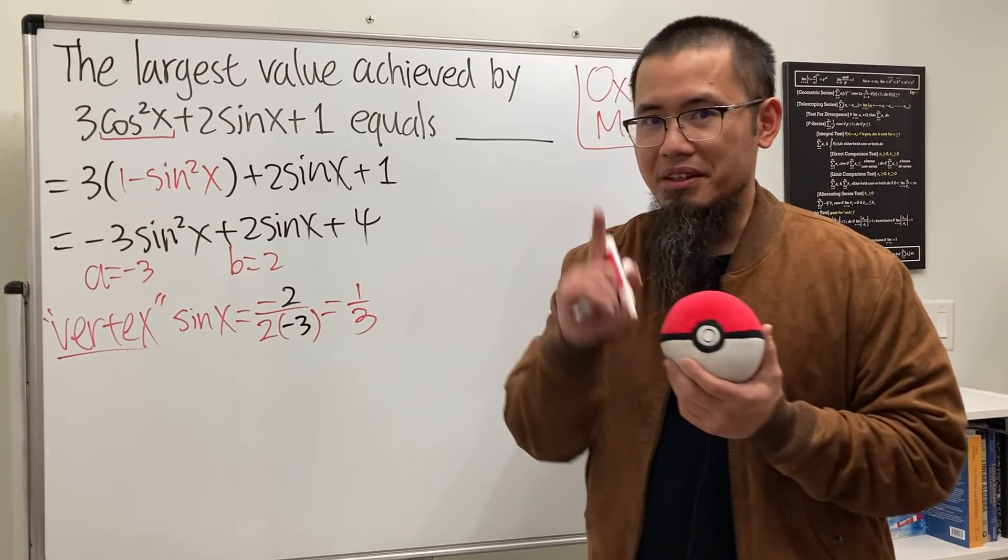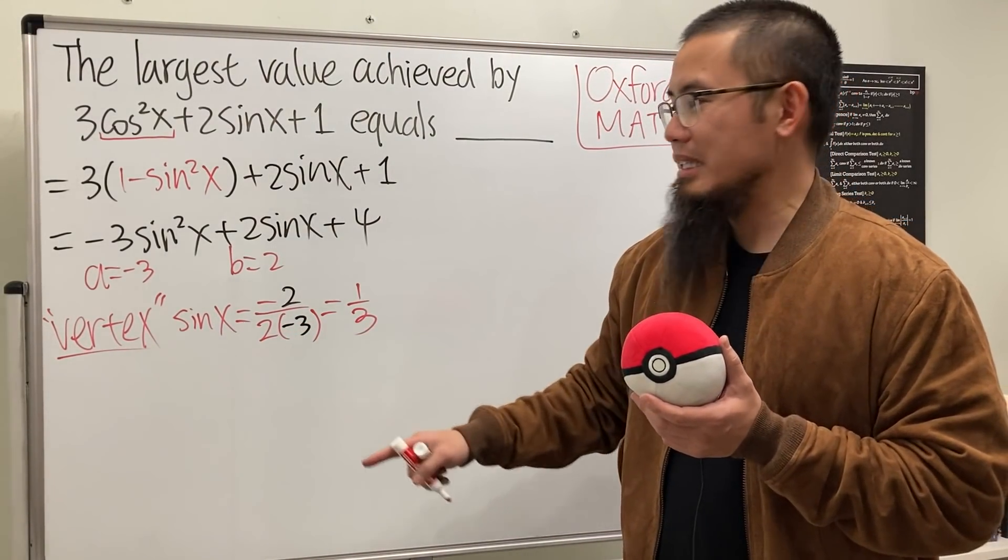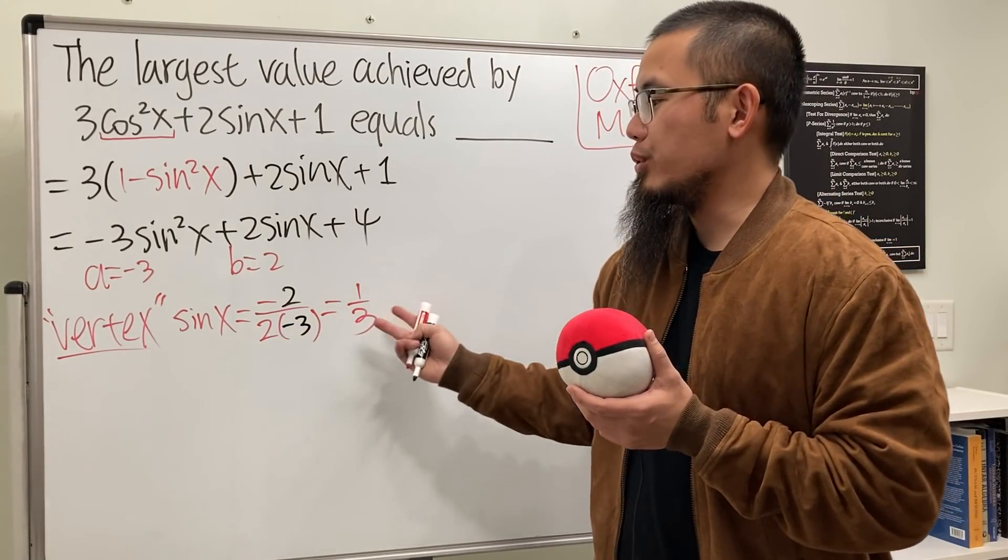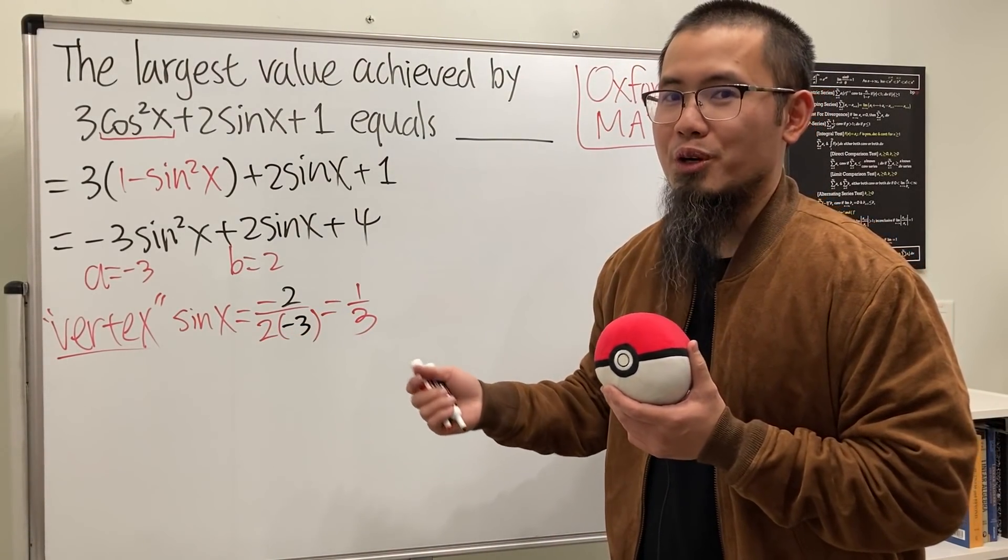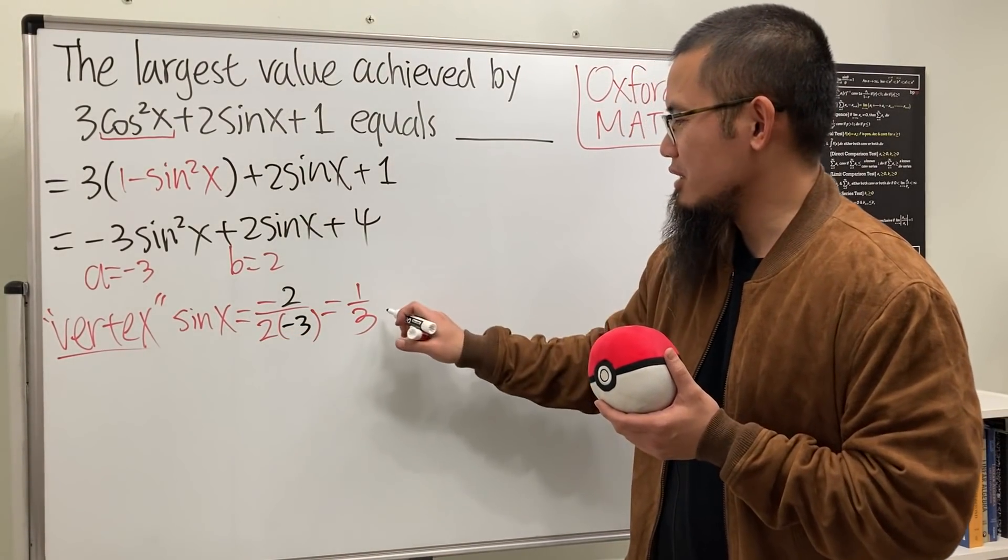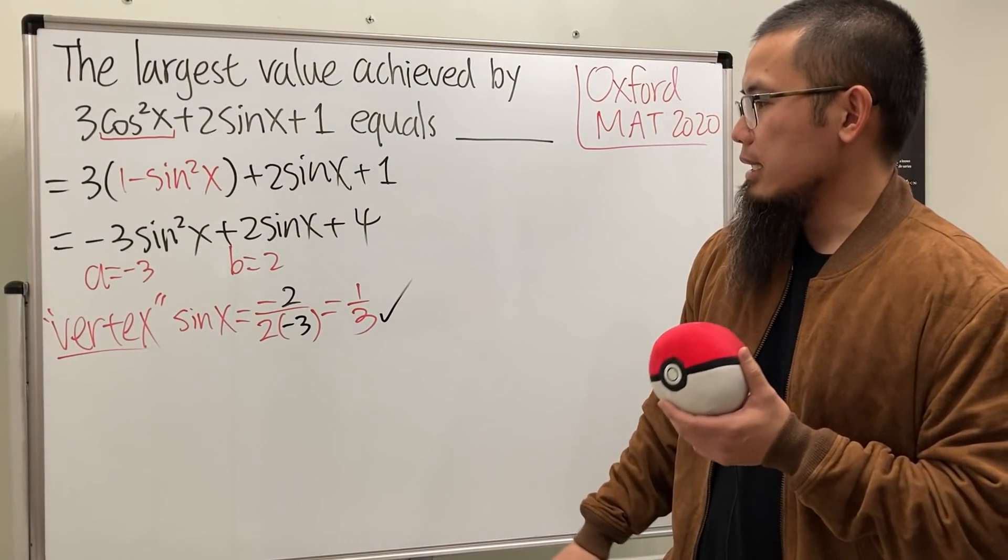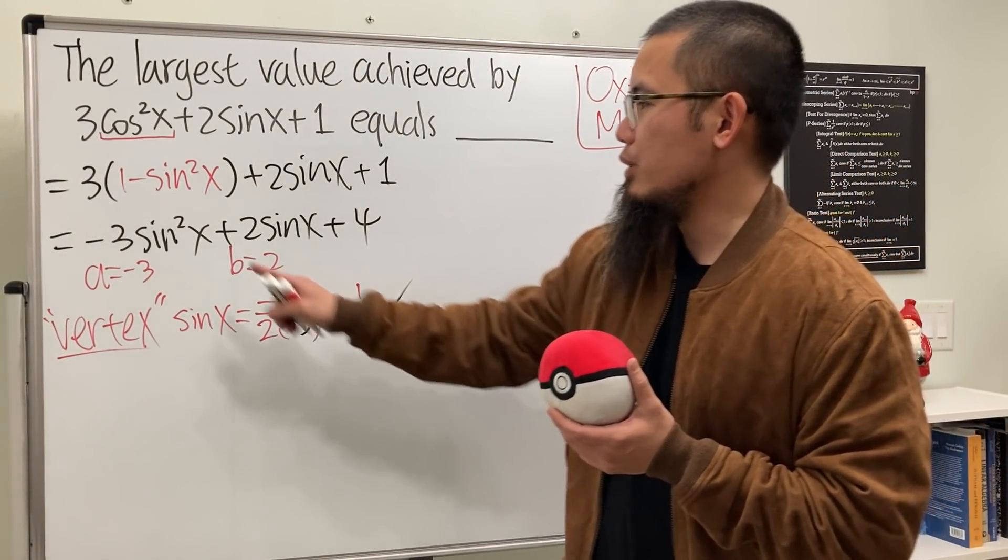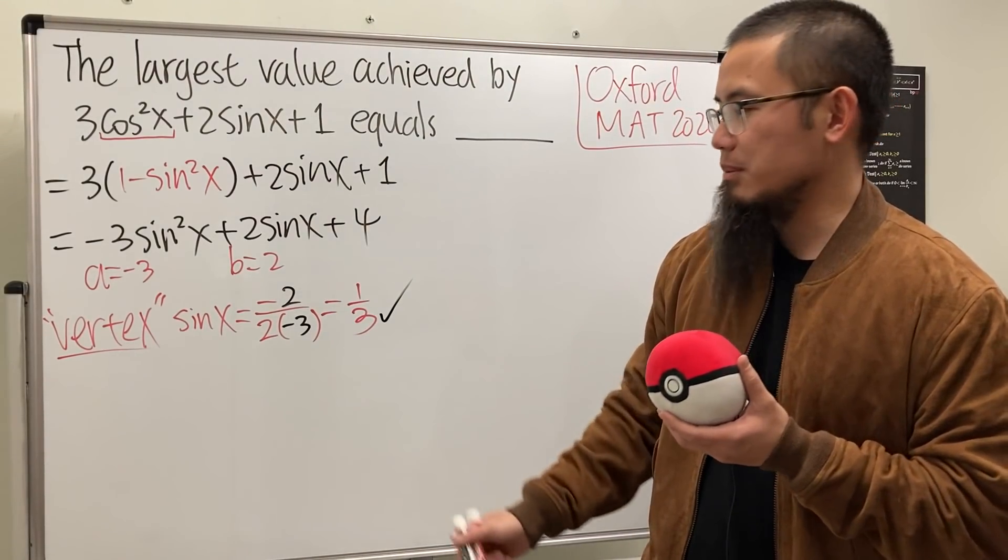That's going to be cancelled positive so we have one third. Cool. So that's the vertex happens at whenever sine x is equal to one third. Can sine x equal to one third? Yes, and that's crucial because if we are saying sine is equal to two, that's when the complex world, you know that's not doable. So this is okay.